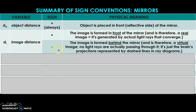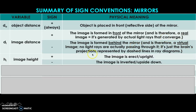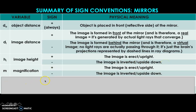The image distance appears as negative when the image is formed behind the mirror and is therefore a virtual image. Next, we have the image height or H sub I, which comes out as positive if the image formed is erect or upright, and negative when the image is inverted or upside down. Magnification has the same physical interpretations as image height in terms of sign — positive means the image is erect or upright, and negative means the image is inverted or upside down.